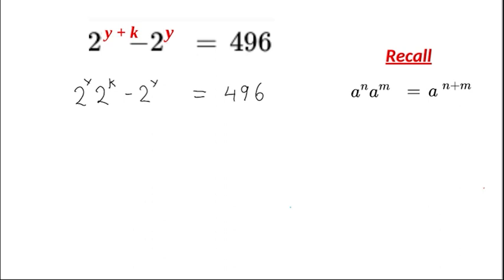We can rewrite it as 2 to the power of y multiplied by 2 to the power of k, and now we have 2 to the power of y still in the equation. Our next step would be to factor out. We can see we have a common factor of 2 to the power of y. So we can say that 2 to the power of y times 2 to the power of k minus 1 is equal to 496.